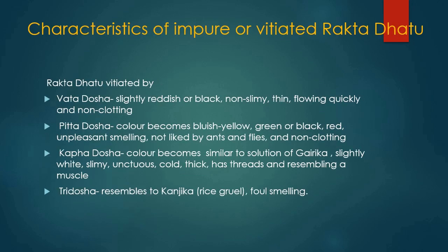Characteristics of impure or vitiated Rakta Dhatu: When vitiated by Vata dosh, it becomes slightly reddish or black, non-slimy, thin, flows quickly and is non-clotting. When vitiated by Pitta dosh, it becomes bluish, yellow-coloured, green or black, red, with unpleasant smell, not liked by ants and flies, and non-clotting. When vitiated by Kapha dosh, colour becomes similar to solution of garic, slightly white, slimy, unctuous, cold, thick, has threads and resembles muscle.